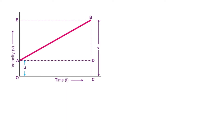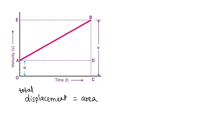Now since it is a velocity-time graph, from the graph we can also find out the area, and the area gives us displacement. So to calculate the total displacement, we can find out the area under the graph. To find the area under the graph, we need to find the area of a trapezium.